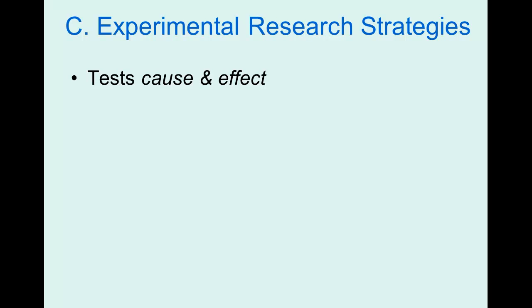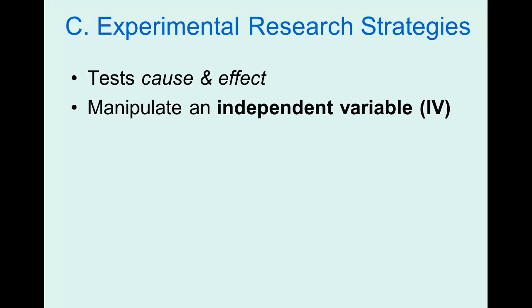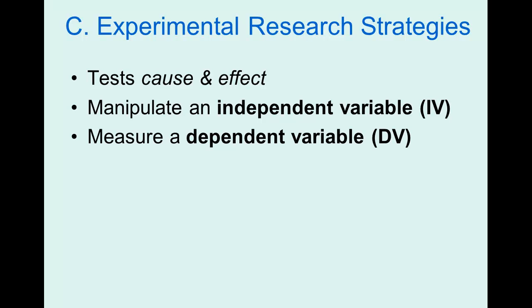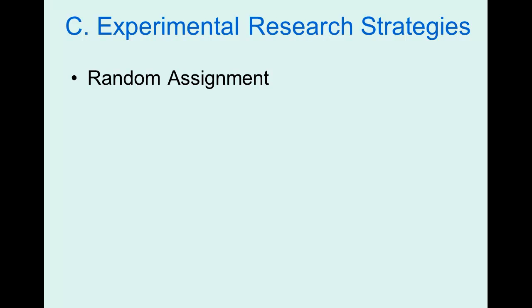We can start talking about causation when we get to the third research strategy — the experiment. In an experiment, we're testing cause and effect because we as researchers are going to manipulate the variables. The variables have specific names: the independent variable, or IV, is the variable we manipulate; and the dependent variable, or DV, is measured. We also need random assignment — randomly assigning all study participants to various conditions.